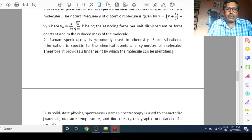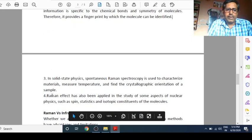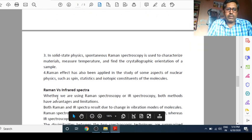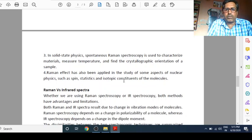Second use. Raman spectroscopy is commonly used in chemistry. Since vibrational information is specific to the chemical bonds and symmetry of molecules. Therefore, it provides a fingerprint by which the molecule can be identified. In solid state physics, spontaneous Raman spectroscopy is used to characterize materials, measure temperature, and find the crystallographic orientation of a sample. Fourth use. Raman effect has also been applied in the study of some aspects of nuclear physics such as spin, statistics, and isotopic constituents of the molecules. These are the applications. I have given four applications. In addition to these, there are so many applications.